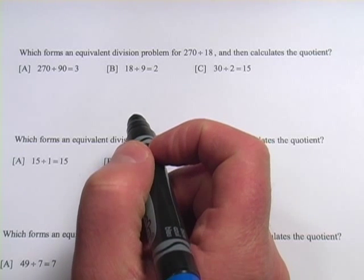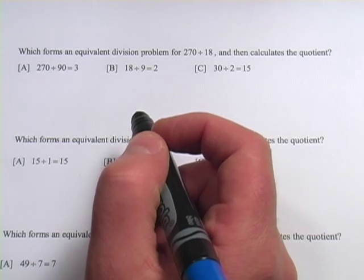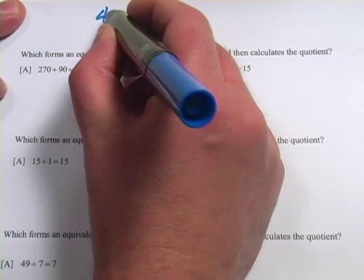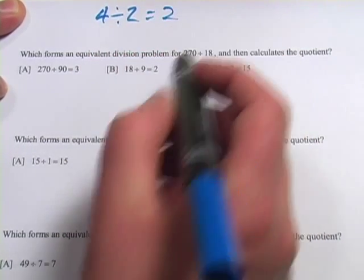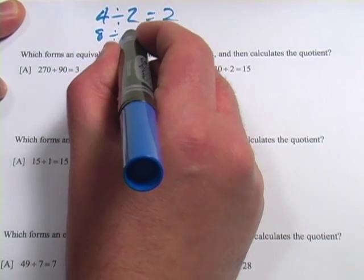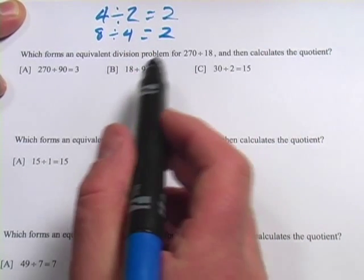In these problems, we're talking about equivalent forms of division problems. What we mean by that is, for example, if you have 4 divided by 2, you know the answer to that—it's going to be 2. An equivalent problem to that would be 8 divided by 4. That also equals 2, and that's what makes them equivalent.